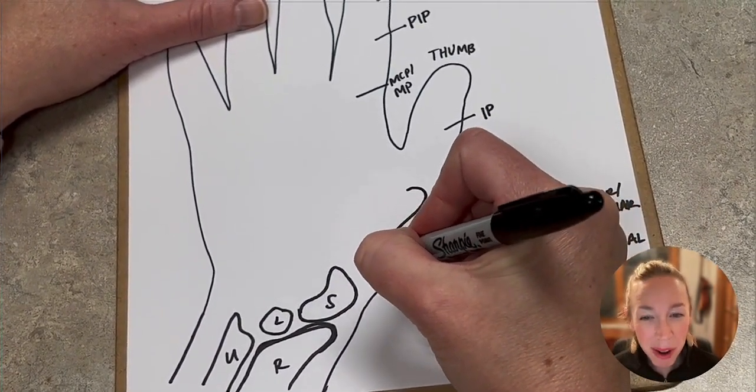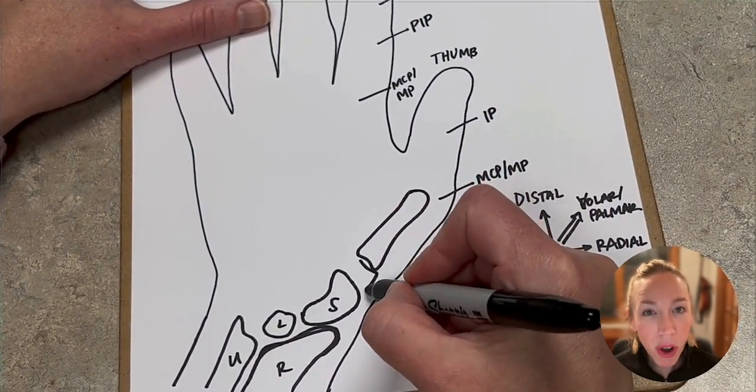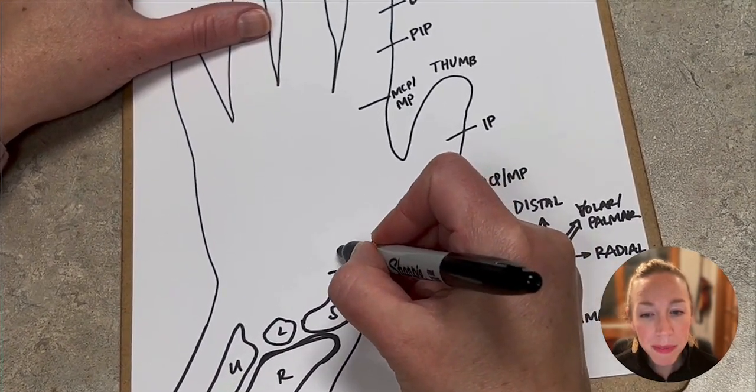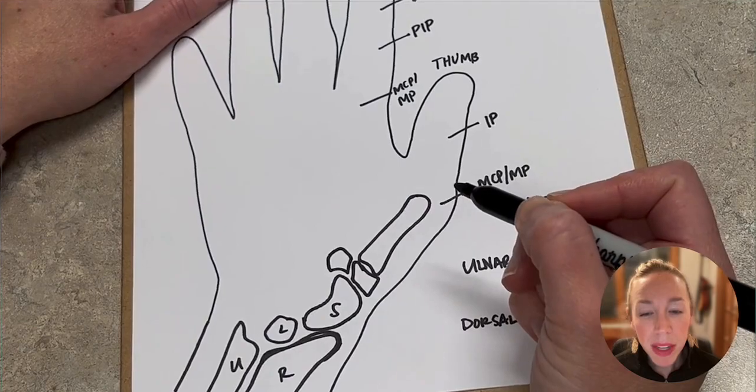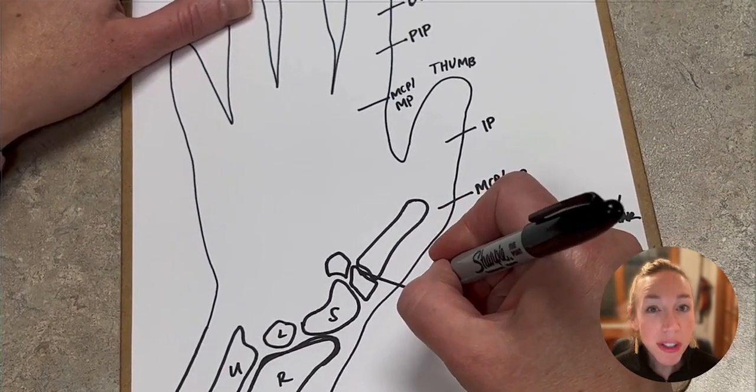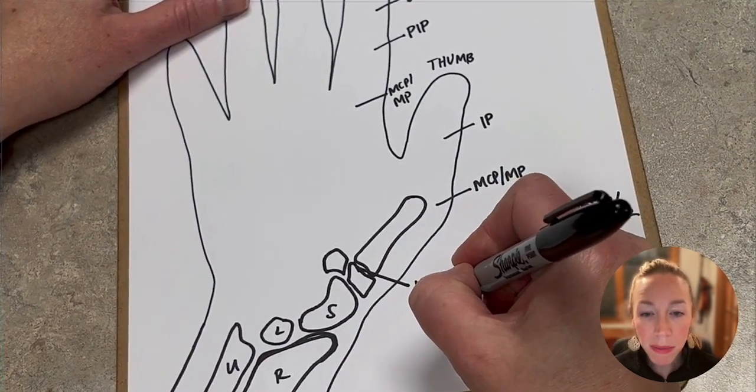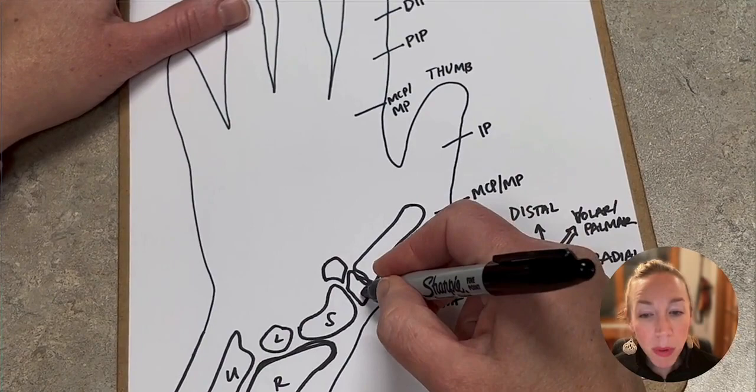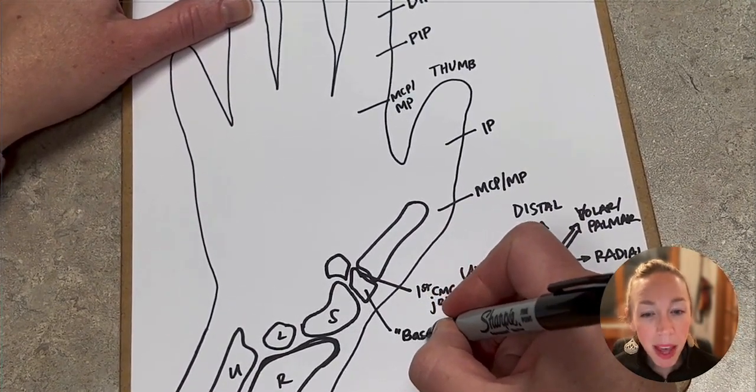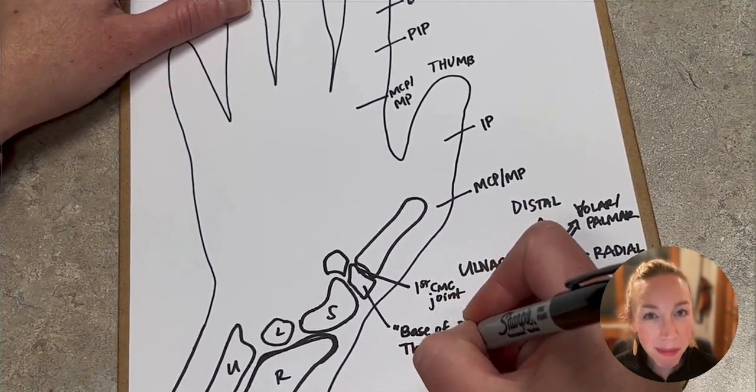Now to the metacarpals. This is the first metacarpal. And at the base here, I'm going to draw a couple bones. We're not going to go over all the bones, but just a couple here. So this first joint at the base of the metacarpal is the first CMC joint or thumb CMC joint. The bone that articulates with the first metacarpal is trapezium. And the way to remember this is base of thumb trapezium. See, it rhymes.